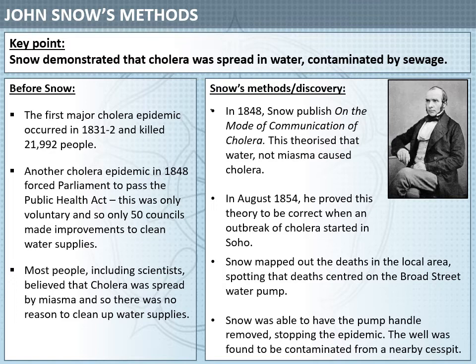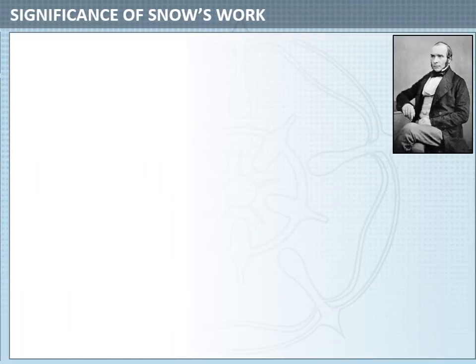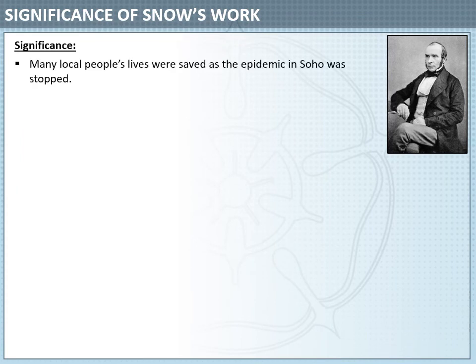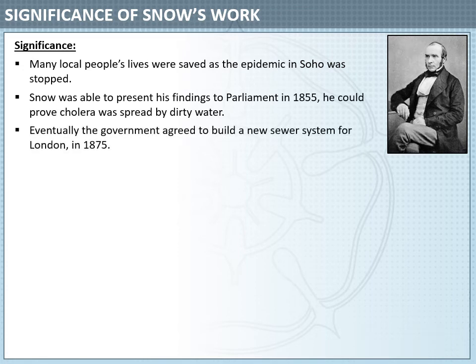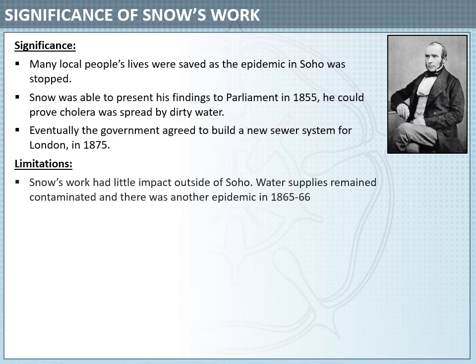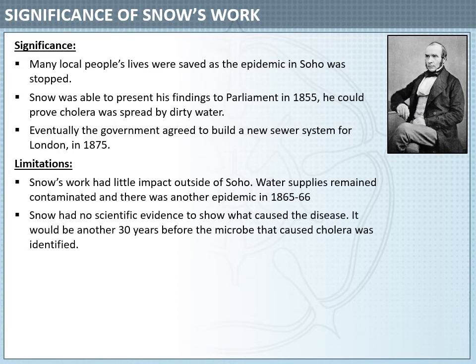Later it was discovered that the well had been contaminated from a nearby site. In terms of significance, Snow saved local people's lives by stopping the epidemic in Soho, and he was also able to present his findings to Parliament a year later in 1855. Eventually the British government agreed to build a new sewer system in London, but notably this was 20 years later.